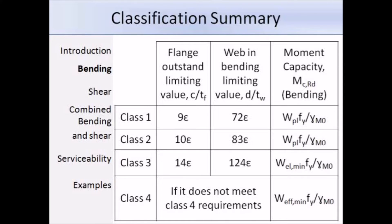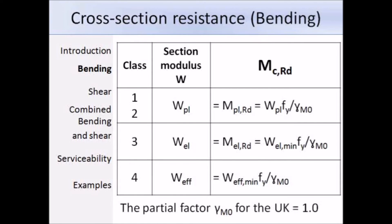Just to reiterate, the section modulus is dependent on the class of the section. For class 1 and 2, Wa will be Wpl the plastic modulus. For class 3 sections, Wa will be taken as Wel the elastic modulus. For class 4 sections, Wa will be taken as Weff the effective modulus. Eurocode 3 states that Wel,min and Weff,min correspond to the fibre with the maximum elastic stress. The value of the partial factor gamma M0 is 1.0 according to the UK National Annex.